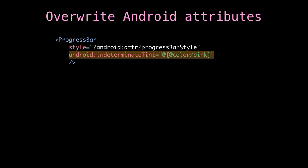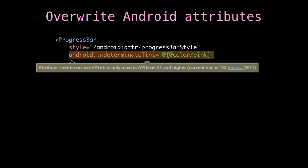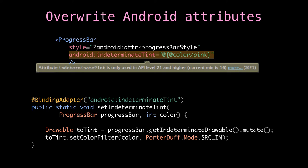You can also overwrite Android attributes. This is pretty unusual because the support library has done a great job on most of these, but there are a couple gaps. One that got me was indeterminateTint. I have a progress bar, my app supports back to API 14, and I want it in pink. Well, I can say: I know what I want to do, I'm going to overwrite Android:indeterminateTint. Every time I put this in my XML, I want you to call my binding adapter and use a tint. And now this just works on all platforms.